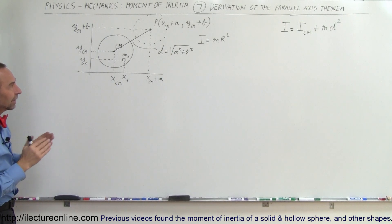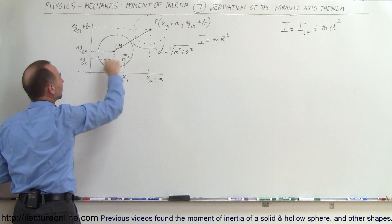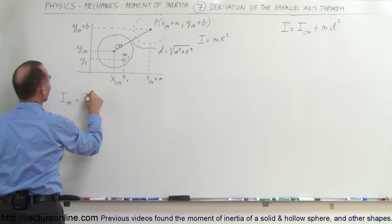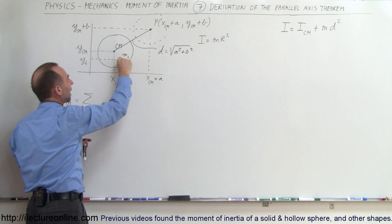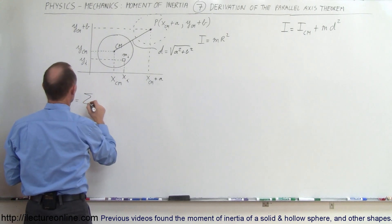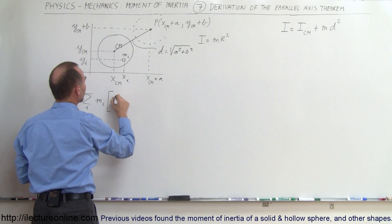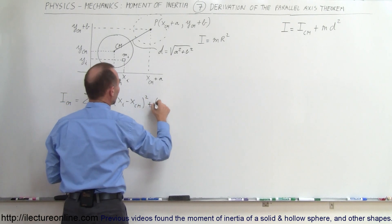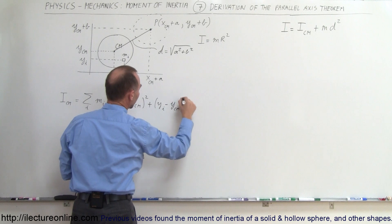Now how do we derive the parallel axis theorem? We start by calculating the moment of inertia when the object's center of mass is at the axis of rotation. That is equal to the sum of all the little pieces of mass multiplied by the distance to the axis of rotation squared, summed up. So: I = Σ mᵢ · [(xᵢ − x_cm)² + (yᵢ − y_cm)²]. We square the distance rather than taking the square root because we want distance squared.